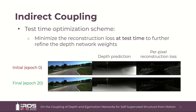The second form of coupling we employ is called indirect coupling. This form of coupling uses a test time optimization scheme to further reduce the self-supervised reconstruction loss on individual samples at test time. We call this indirect coupling because the depth and ego-motion networks are implicitly linked via the gradient flow from the loss function during optimization. Our test time optimization scheme refines the weights within the depth network, causing the depth predictions to change in such a way that further reduces the reconstruction loss. The initial prediction is compared with the optimized prediction after 20 gradient descent steps. We can see that the overall depth accuracy improves throughout the image, and as a result, the per-pixel reconstruction loss is reduced.